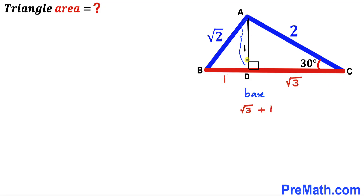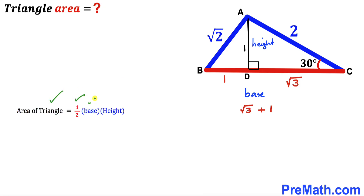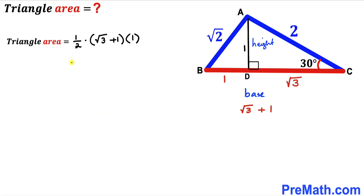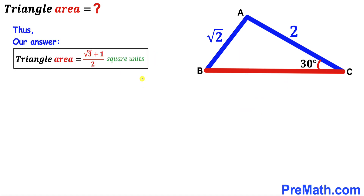The height of triangle ABC is the perpendicular AD, which is 1 unit. Now for the final step, we calculate the area of triangle ABC. Area = ½ × base × height = ½ × (√3 + 1) × 1. Simplifying, the area of triangle ABC is (√3 + 1) / 2 square units.